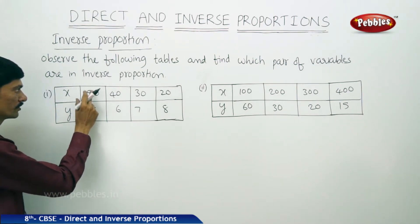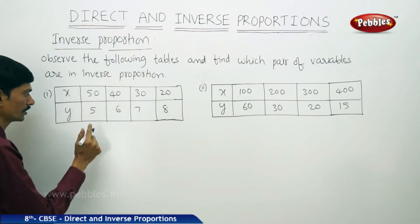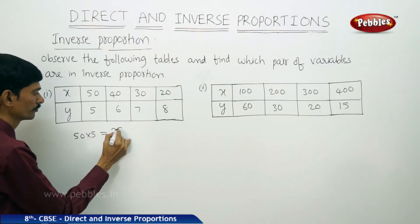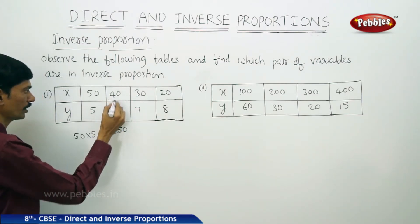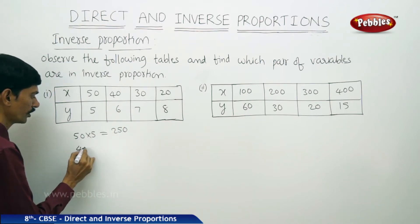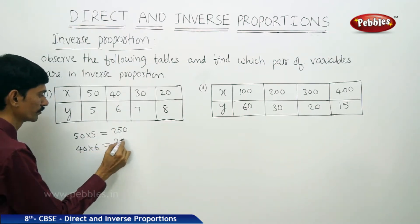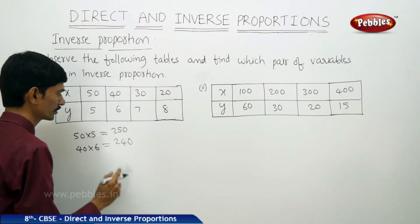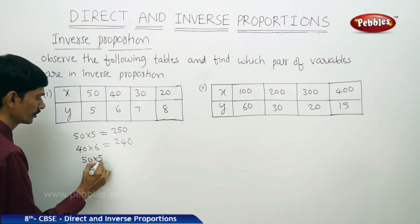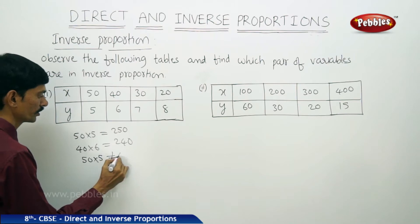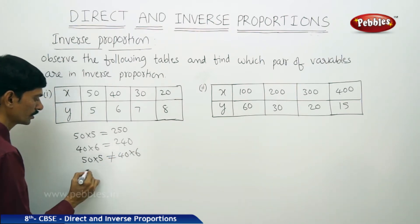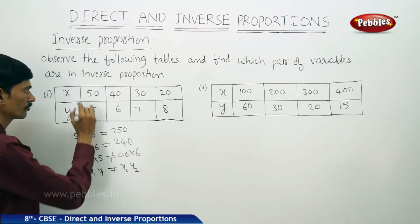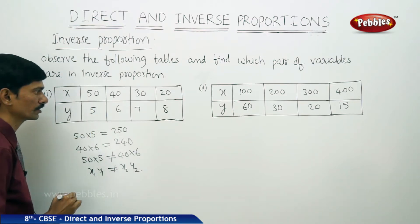Let us find the product of the two quantities in each case for the first table, where values of x and y are given. In the first case, 50 into 5 gives 250. In the second case, 40 into 6 equals 240. These two are not equal, so we need not check further cases. Since x1 into y1 is not equal to x2 into y2, the two quantities x and y are not in inverse proportion.